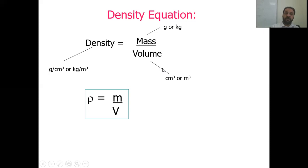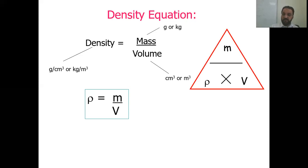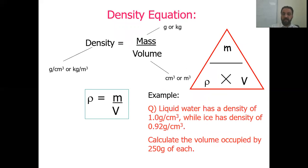You can use the triangle formula to rearrange the equation. Here is an example: liquid water has a density of 1 gram per centimeter cube, while ice has a density of 0.92 grams per centimeter cube. Calculate the volume occupied by 250 grams of each.